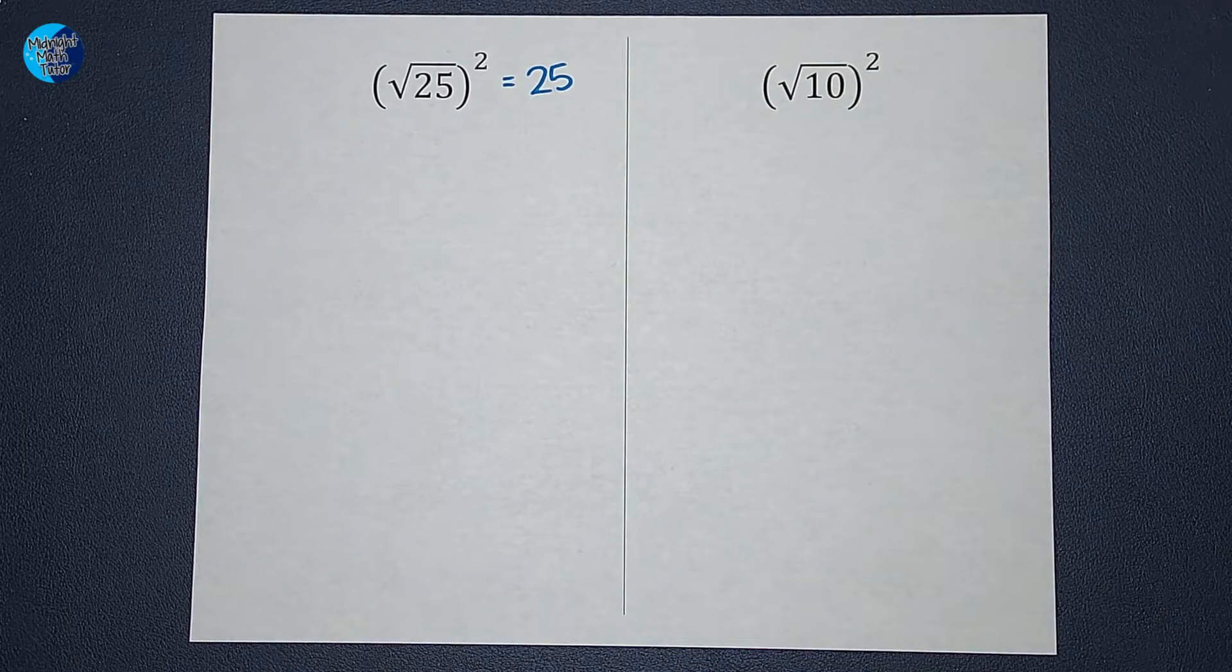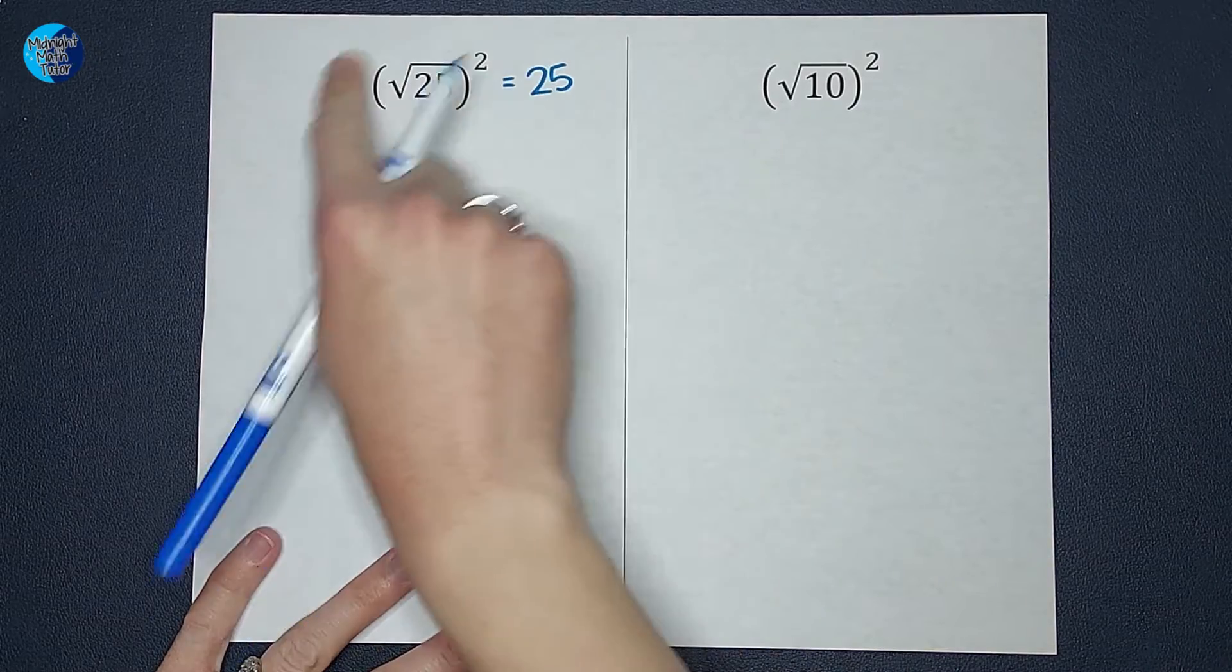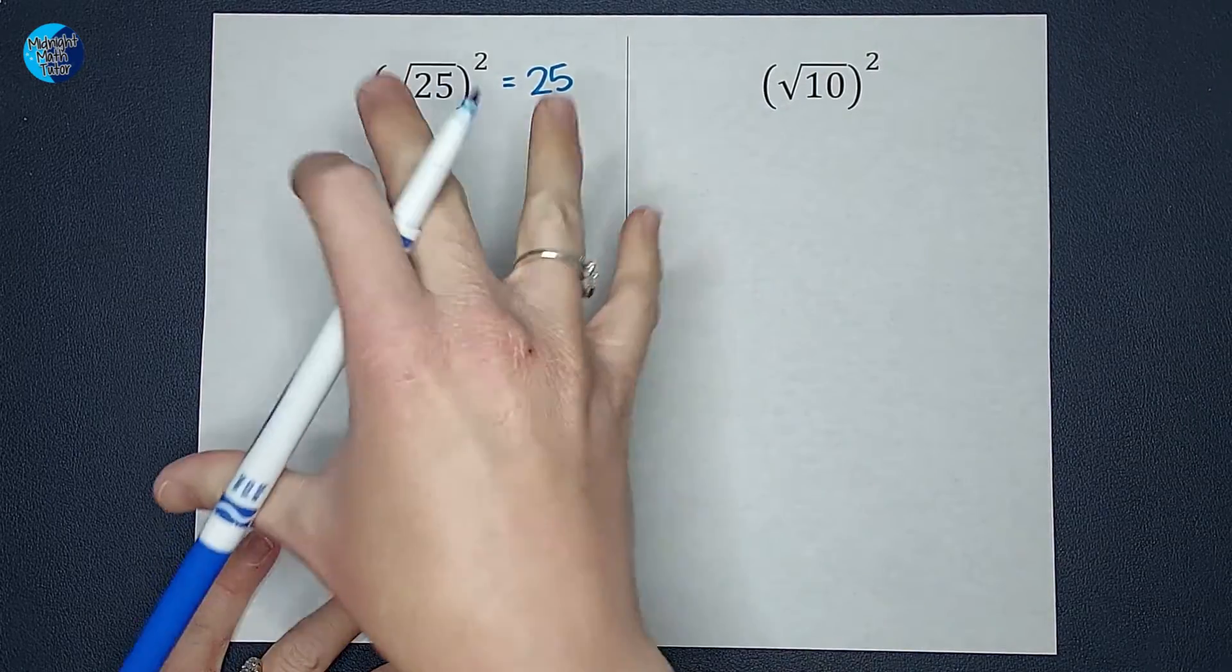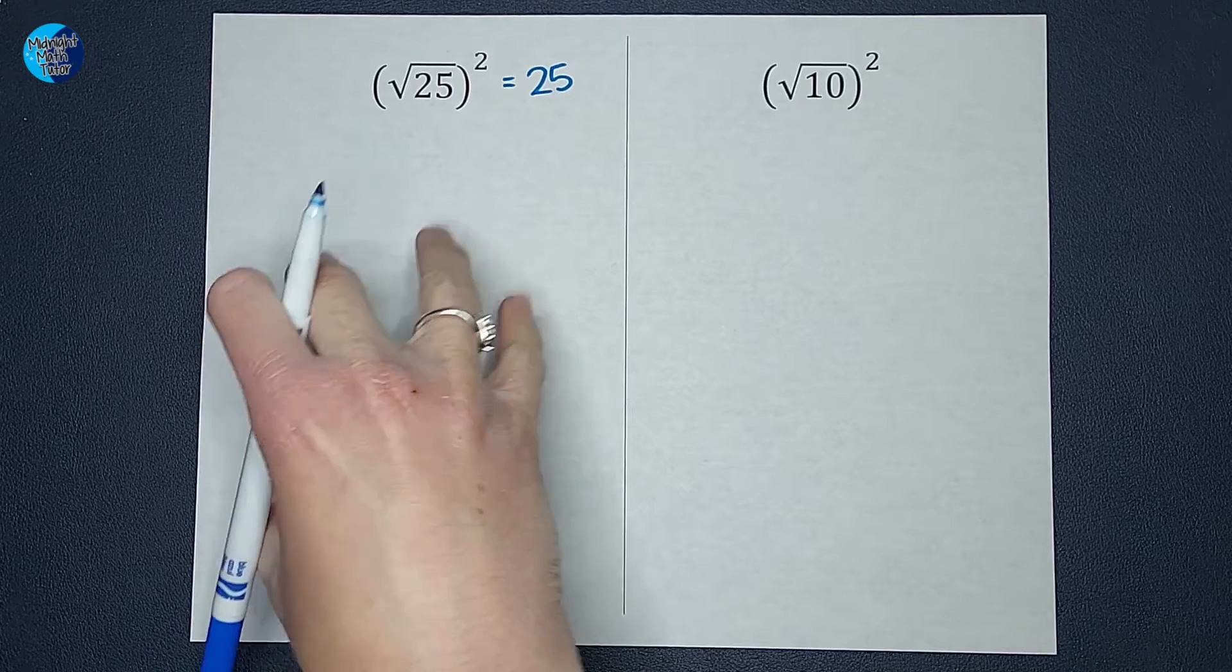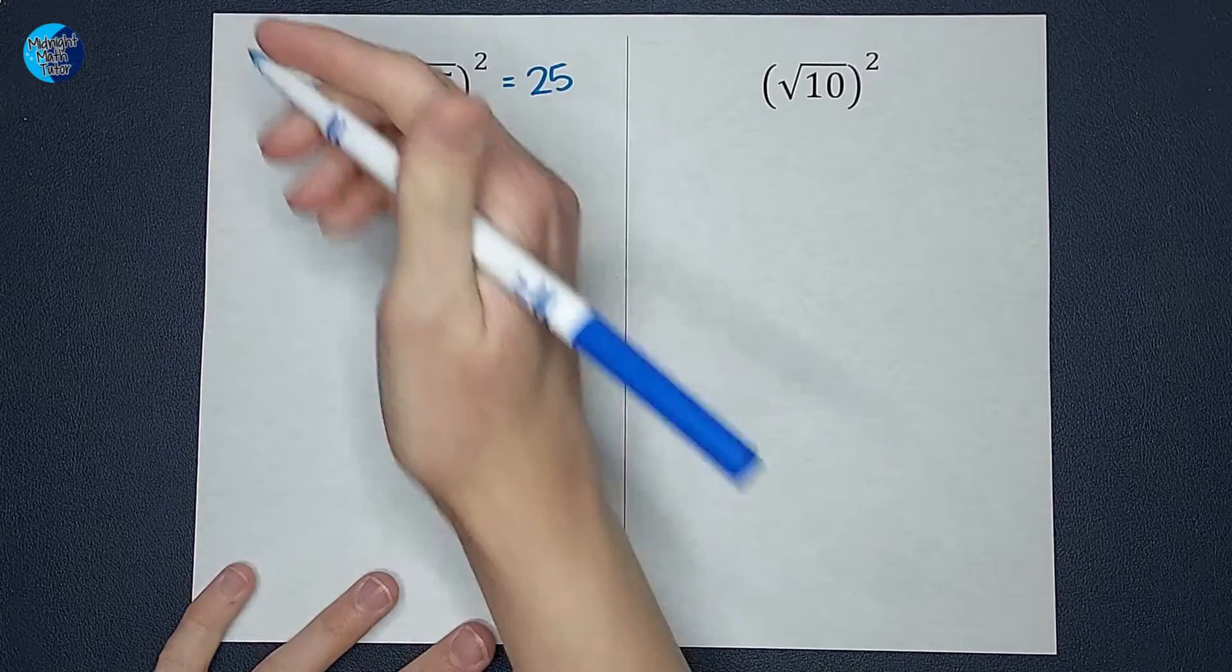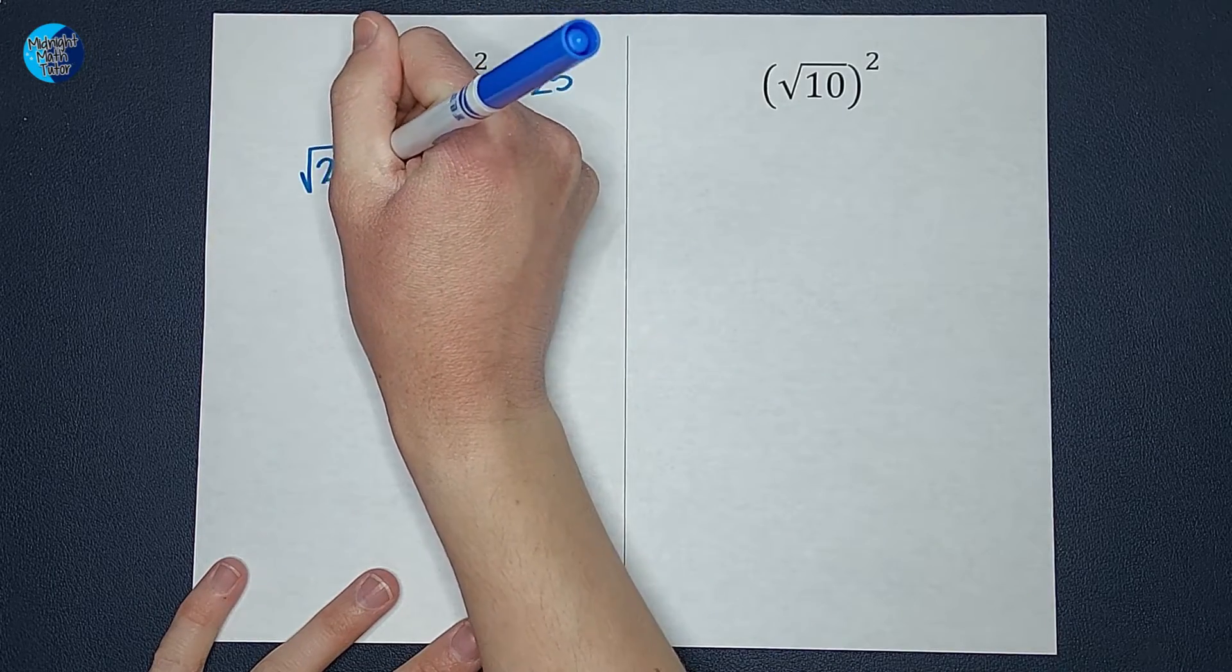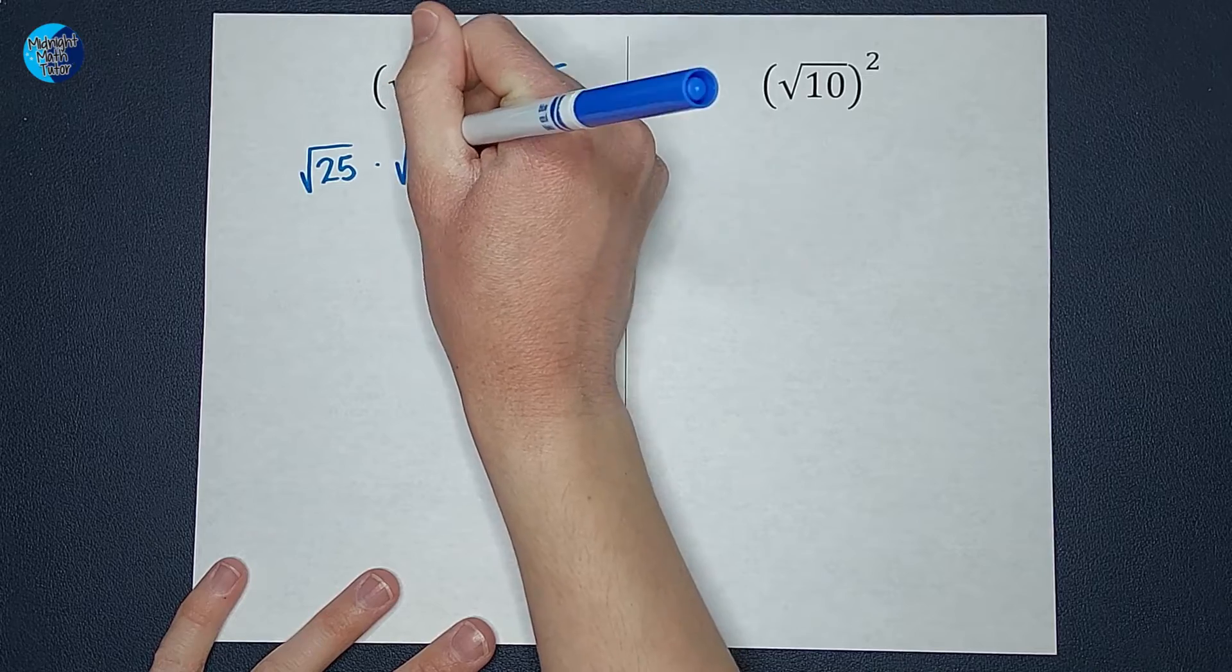I'm going to show you two different reasons why or two different ways you can look at it. So first of all, we know when we square things that we are doing that number or that square root multiplied by itself, right? So this would be the square root of 25 times the square root of 25.